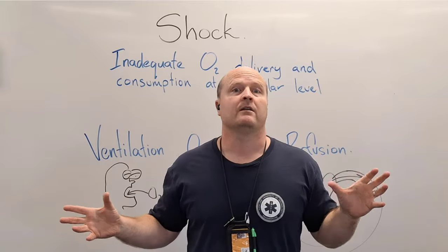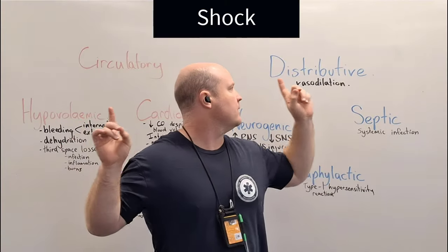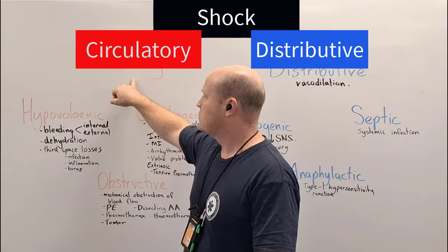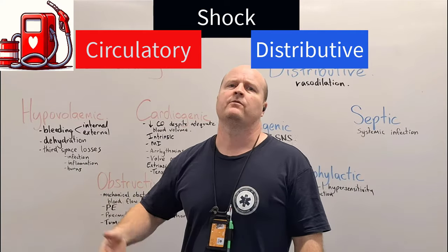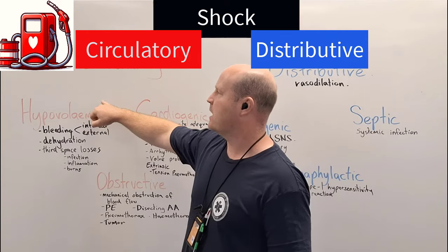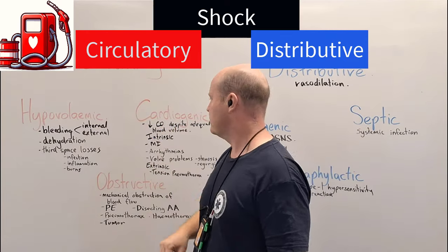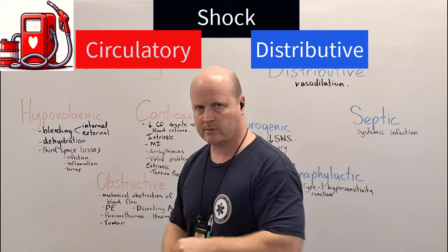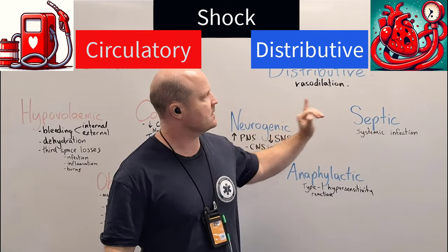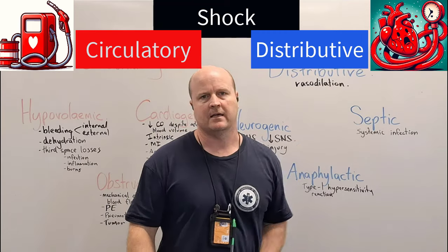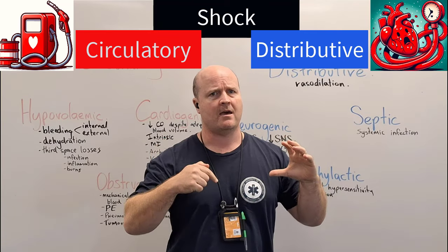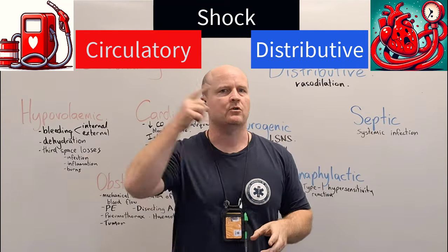Now let's look at the main categories. We've got distributive and circulatory as our broad categories. Think of circulatory like a petrol station with a pump, pipes, and fuel. Cardiogenic is a problem with the pump, hypovolemic is not enough fuel, and obstructive is a blockage in the pipes. Distributive is where those things are fine, but we've got massive vasodilation — our blood vessels are way too big for the amount of blood volume we have, and therefore we can't adequately circulate that blood.